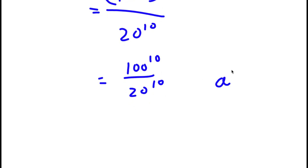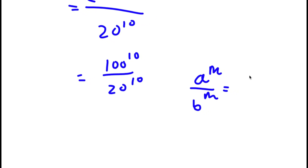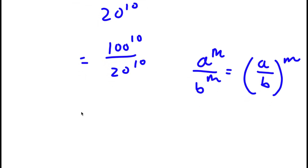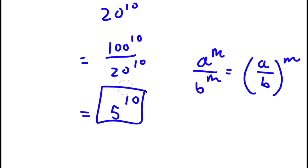Now if I have something in the form a to the power of m over b to the power of m, this is equal to a over b to the power of m. So 100 divided by 20 is going to equal 5, so I'm left with 5 to the power of 10. So this is my answer.